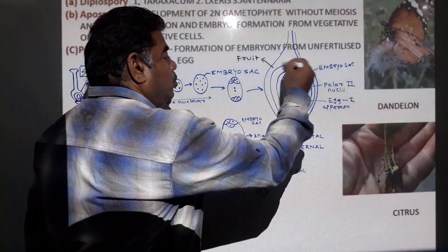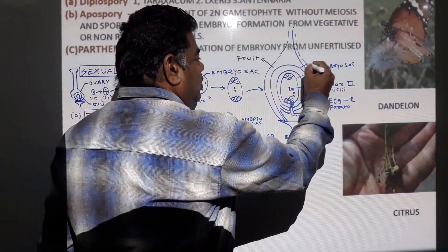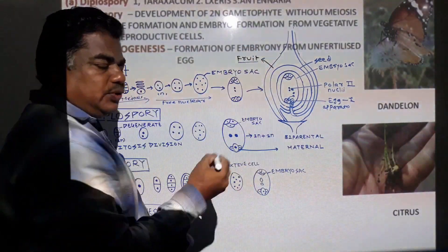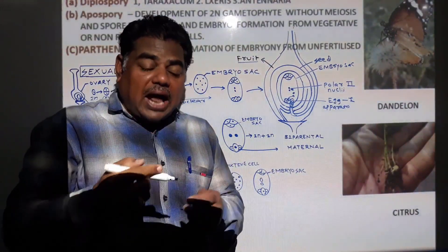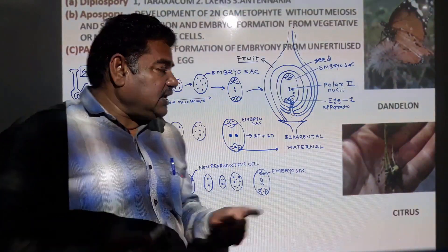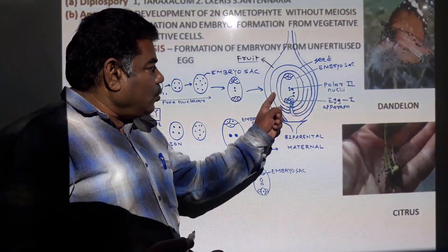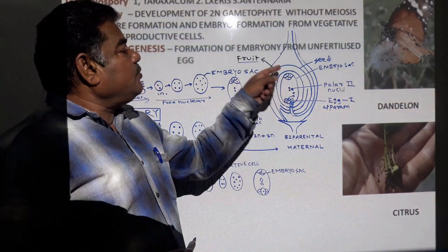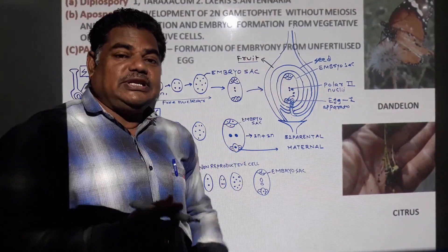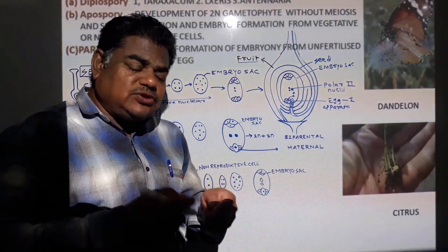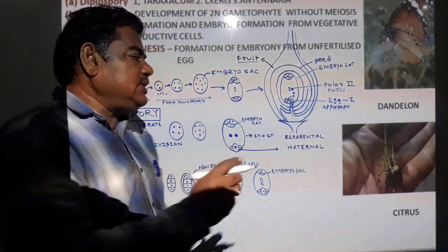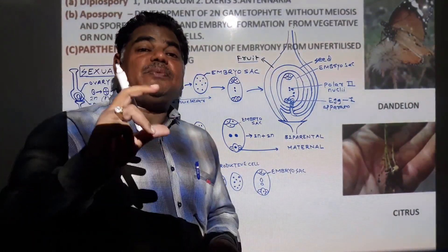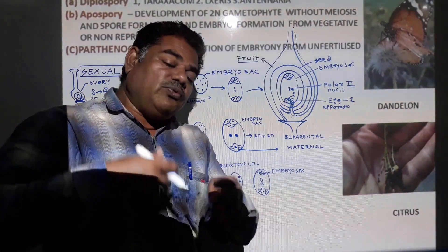After fertilization, the ovule converts into a seed and the ovary wall converts into a fruit. This is the rule for angiospermic plants. But in the case of Apomyxis, this fertilization process does not take place — seed formation occurs without the act of fertilization. We call it Apomyxis.